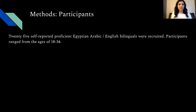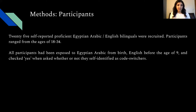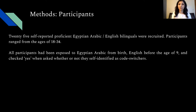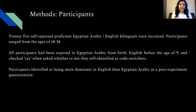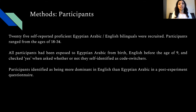For this experiment, 25 self-reported Egyptian Arabic-English bilinguals were recruited, ranging in age from 18 to 34. All participants had been exposed to Egyptian Arabic from birth and to English before the age of nine. They confirmed they identified as code switchers, and in a post-experiment questionnaire they indicated they were more dominant in English than in Egyptian Arabic.